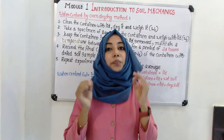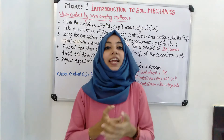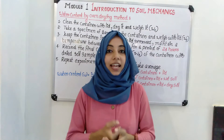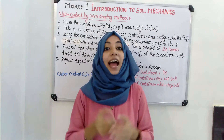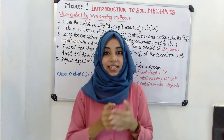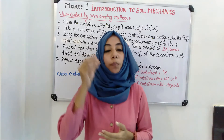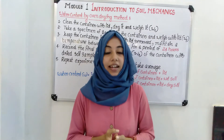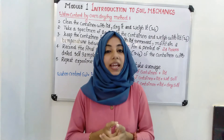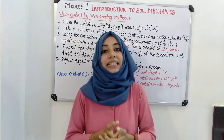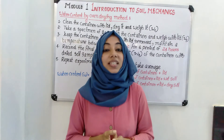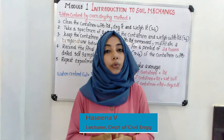The experimental setup consists of various apparatus: a weighing balance, container, thermostatically controlled oven, desiccator, desiccating agent, and a soil sample. The procedure begins by taking a clean container with its lid and recording its weight, termed as W1.